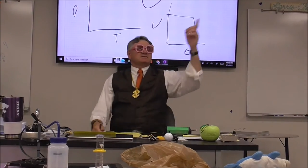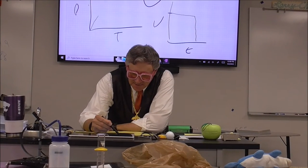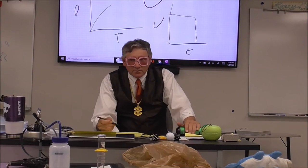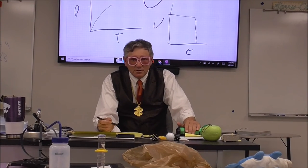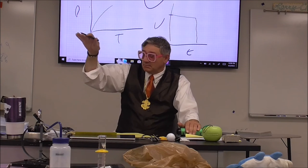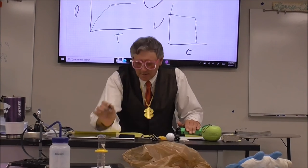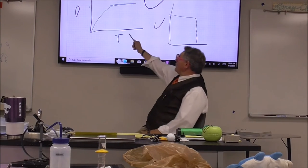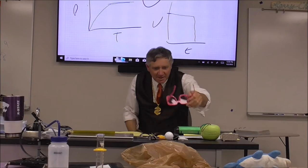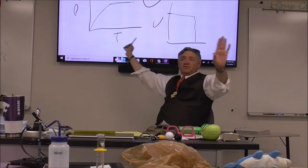The position-time graph is going to be the upper-lip shape — something like this — and then as soon as I stop it, it goes horizontal. Flat line. So this would be it rolling along — boom, I stop it — flat line.